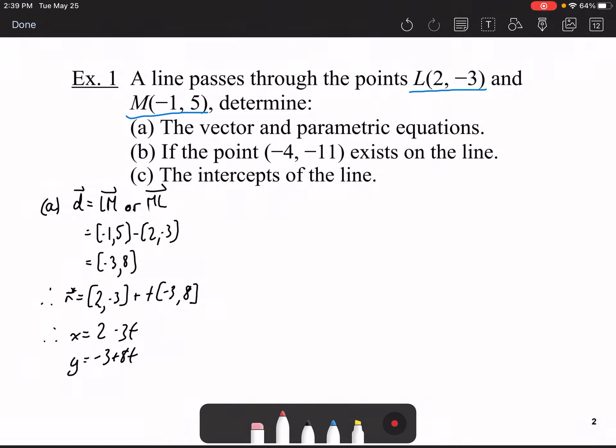To find out if the point (-4, -11) exists on the line, you must see if the value of t is the same in both equations. I think it might be easier in the parametric equations. So -4 = 2 - 3t, solving gives t = 2 in the first equation. And t = -1 in the second equation. Since these two values are not the same, that t value doesn't exist. Therefore, (-4, -11) is not on the line.